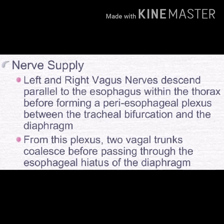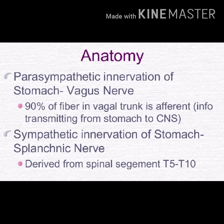The nerve supply: the left and right vagus nerves run parallel to the esophagus within the thorax, forming a periesophageal plexus between the tracheal bifurcation and the diaphragm. From this plexus, two vagal trunks coalesce before passing through the esophageal hiatus of the diaphragm — this is the parasympathetic innervation via the vagus nerves. 90% of the fibers in the vagus trunk are afferent, transmitting signals from the stomach to the brain. The sympathetic innervation is via the splanchnic nerve, derived from spinal segments T5 to T10.